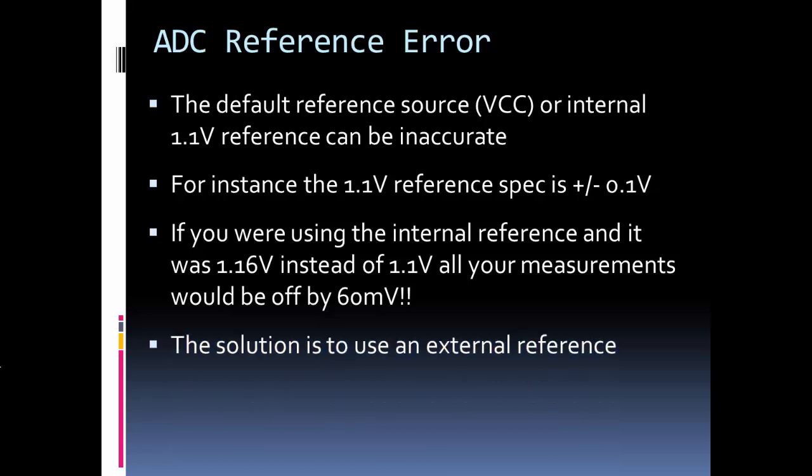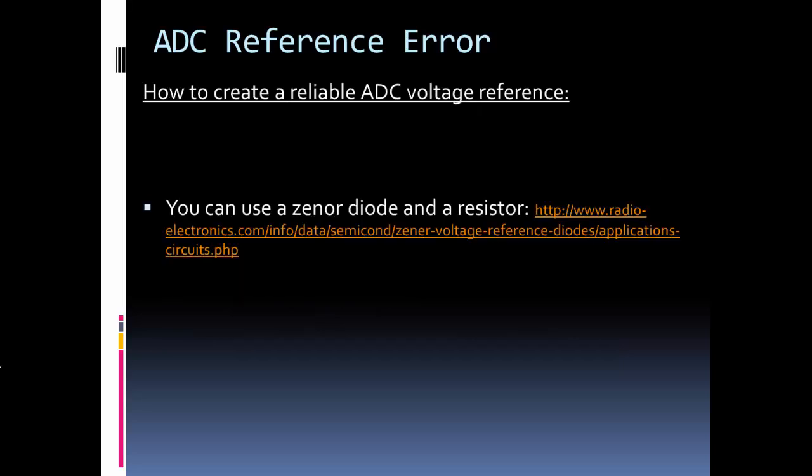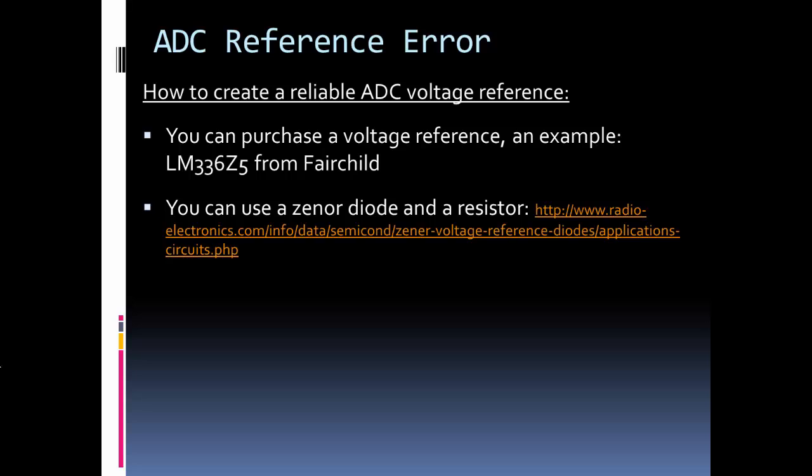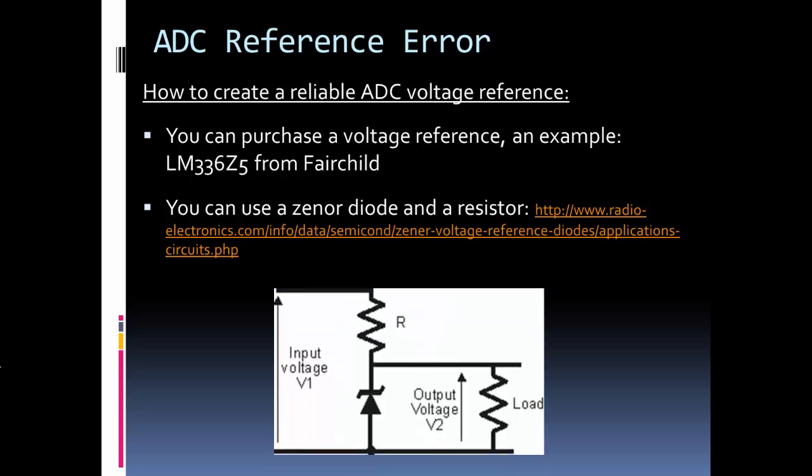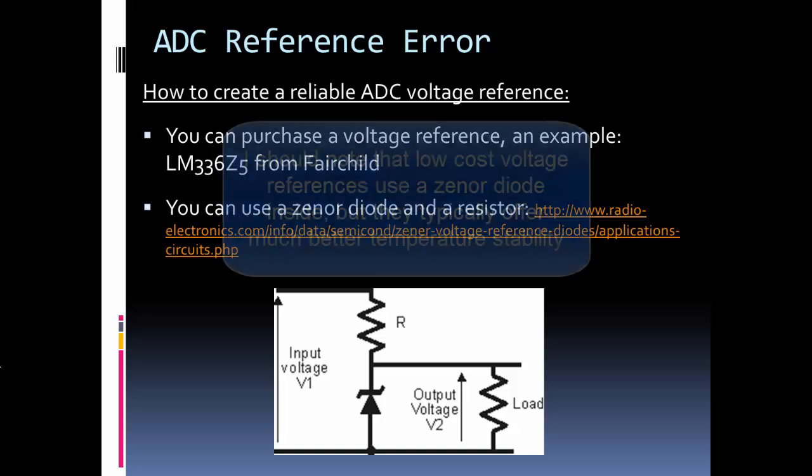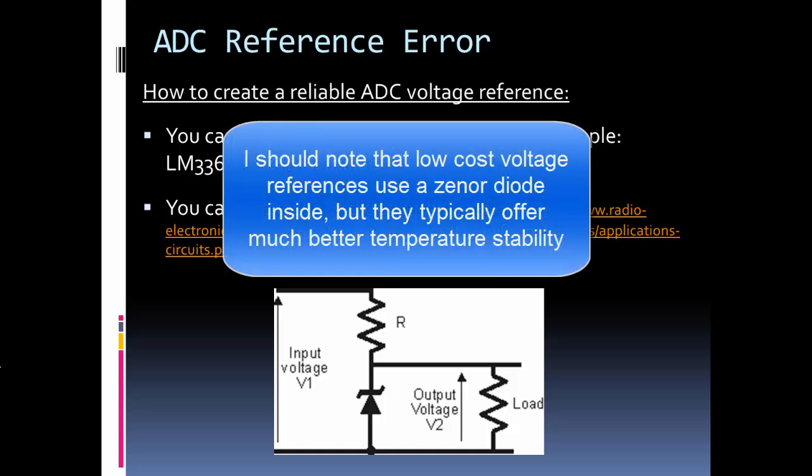The big solution is just to use an external reference. If accuracy is critical for your design, use an external reference. You can buy for real cheap, for a dollar or even less, you can buy voltage references. I have a model number here from Fairchild as an example. Texas Instruments makes them, Maxim makes them, there's a ton of them out there. Another choice is you can use a zener diode with a resistor, and here's a picture of the circuit. This is another way to go. I linked this article. This article kind of goes over how to use this, but once again, why use a zener diode in a resistor when you can just get a voltage reference for really low cost?